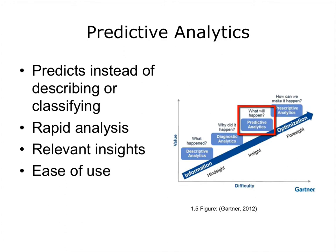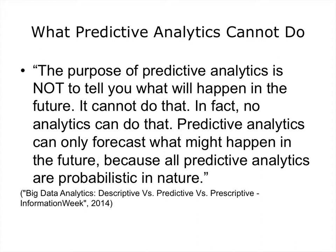The third attribute defined by Gartner is an emphasis on the business relevance of the resulting insights. Information that would directly affect the care and prevent infants from dying is relevant. The fourth attribute is an emphasis on ease of use, thus making the tools accessible to business users — in other words, these tools should be available to the clinical staff. However, it is important to note that, as Michael Wu of Lithium states, the purpose of predictive analytics is not to tell you what will happen in the future — it cannot do that. Predictive analytics can only forecast what might happen in the future, because all predictive analytics are probabilistic in nature.